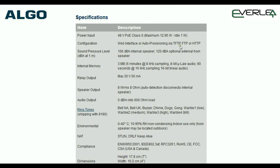Configuration is done via web interface and you can auto-provision. It has 3MB of internal memory for recordings and you can record your own announcements and ringtones and load them into the unit. The relay is 30 volts, 50 milliamp speaker output. It talks about the default ringtones loaded in the unit. Important note: it's non-condensing - don't put it in the rain, it's not waterproof. If you want a waterproof unit of this type, you're looking for the 8186. NAT compliance and dimensions are also listed.